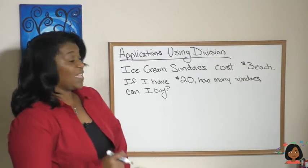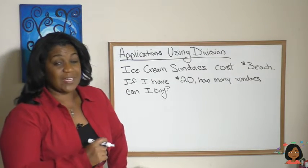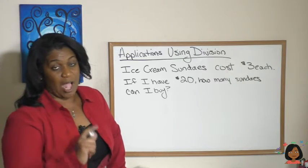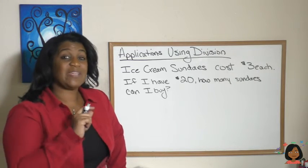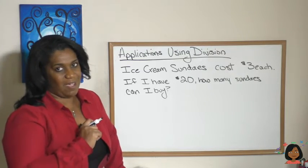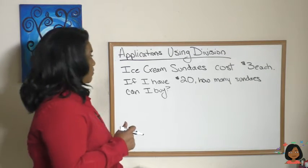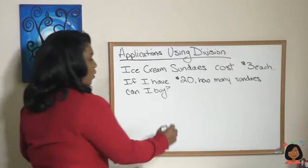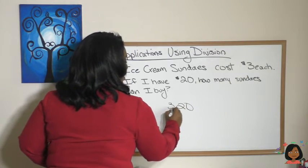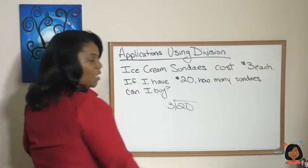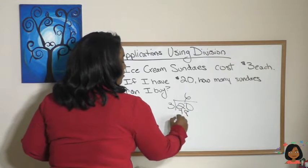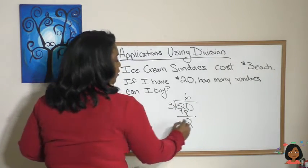Take a look at this next example: ice cream sundaes cost three dollars. If I have $20, how many ice cream sundaes can I buy? Let's set up the division problem — 20 divided by three. We know that goes in six times and there are two left over.